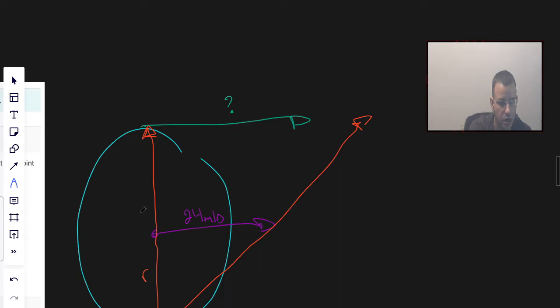So this is R, this is R, which makes this whole thing 2R, which is double. When you do similar triangles, you find this is going to be 2 times 24 meters per second, which is 48 meters per second.